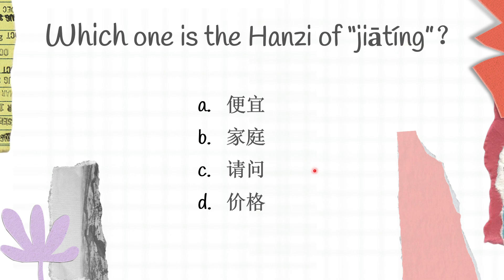Let's try to think first. A is 便宜 (pian yi), B is 家庭 (jia ting), C is 请问 (qing wen), and D is 价格 (jia ge). The right answer for this question is B.